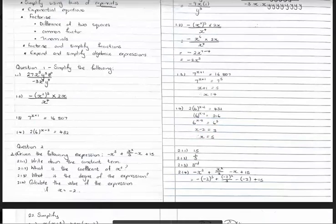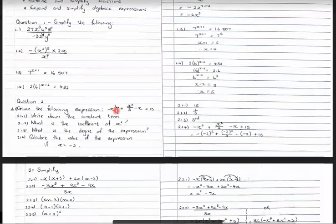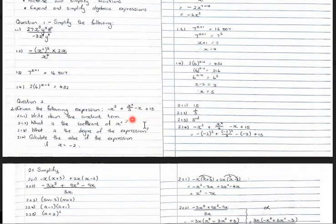Question 2. We have the expression: negative x cubed plus x squared divided by 3, minus x plus 15. The constant term is any term that does not have a variable attached to it — in this case the answer is 15. The coefficient of x squared: you can rewrite x squared divided by 3 as one third times x squared. The coefficient — the number in front of the variable — is therefore one third.